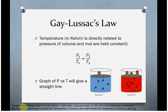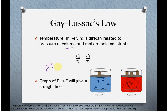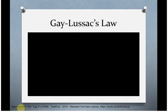Gay-Lussac's law is the direct relationship between Kelvin temperature and pressure. The idea is that higher temperature means faster-moving particles, and if volume is held constant, that faster motion produces higher pressure. So if P goes up, T goes up; if P goes down, T goes down.